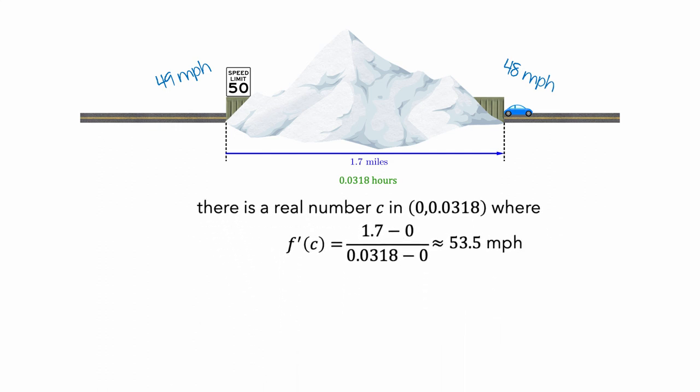This means that there is some time value c where the instantaneous speed of the car at time c is equal to 53.5 miles per hour. So the mean value theorem is telling us that, despite traveling below the speed limit at the entrance and exit to the tunnel, we know that the car must have been traveling exactly 53.5 miles per hour sometime in the tunnel.